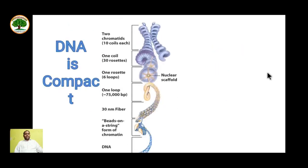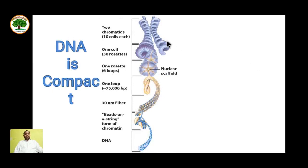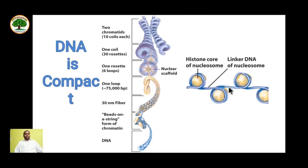How compact is this DNA? DNA is very compactly arranged in the cell. In its highly condensed form it is called chromosomes, which has two chromatids. Each chromatid has two coils, and each coil consists of 30 rosettes. One rosette has six loops, and one loop has approximately 75,000 base pairs, forming a 30 nanometer thick fiber. When further straightened, it looks like a bead-on-a-string form of chromatin.